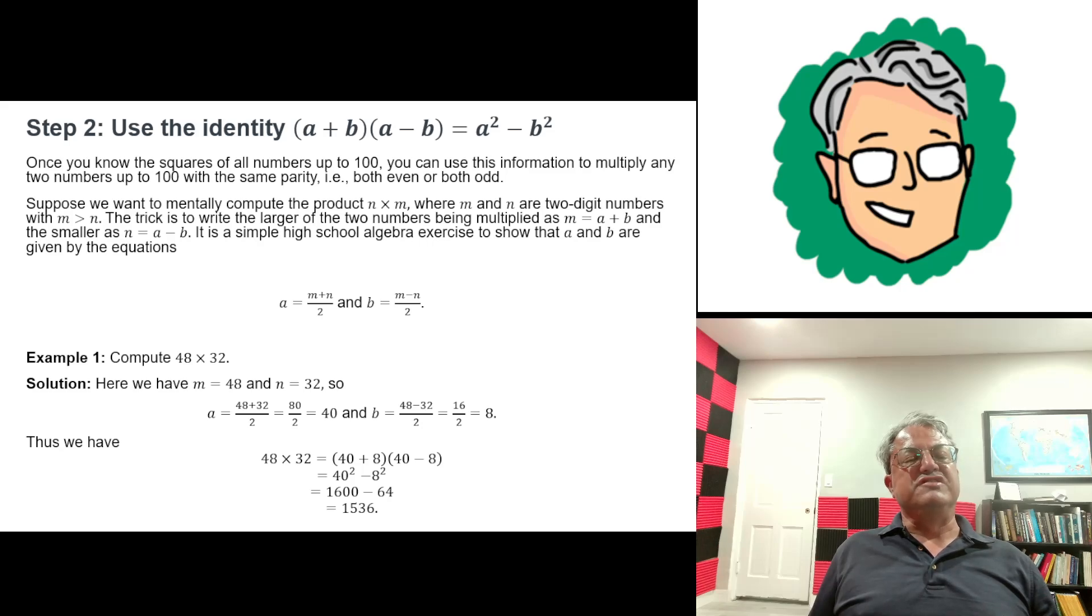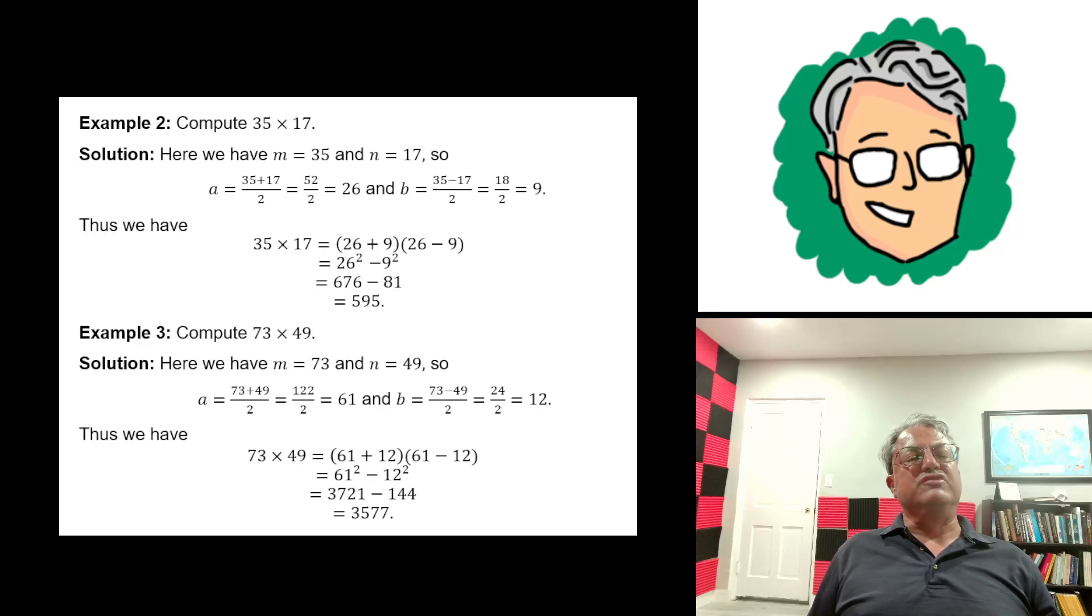So, here's a pretty easy example. 48 × 32. Well, here we can just, and another thing that makes this easy, just remember that A is the average of these numbers. It's the sum divided by 2. So, the average of 48 and 32 is 40. You might not have to calculate the sum and divide by 2. You can just sort of do that in your head. So, A is 40, and B is half the difference. So, the difference here is 16. We're dividing that by 2. That gives us 8. So, A is 40 and B is 8. Those are easy numbers to work with. So, 48 × 32 is going to be 40² - 8². Those are both easy to calculate. 40² is 1,600. 8² is 64. So, you take 1,600 - 64, and that gives you 1,536. That's the answer. I'm going to do a couple more examples because that was a pretty easy one.